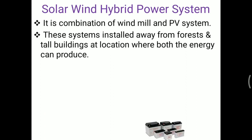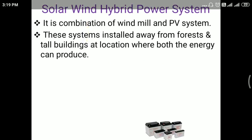This system is installed away from forests and tall buildings, at a location where both energy sources can be produced. If we install solar energy in a forest, due to shadow the production efficiency decreases. And if wind energy is installed near a city area, the air velocity is not maximum — the cutoff speed is very low and wind energy cannot be produced at maximum. So site selection is very important.